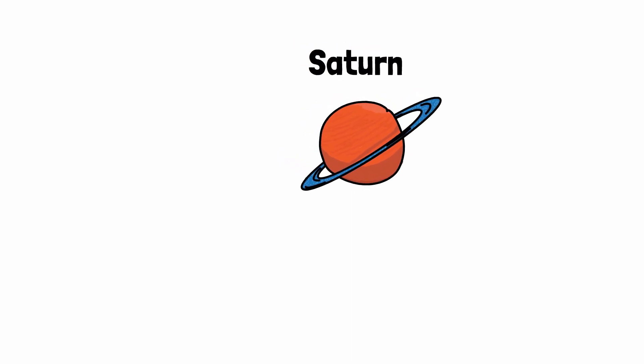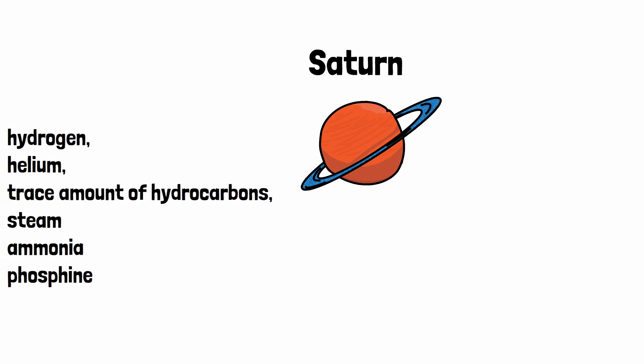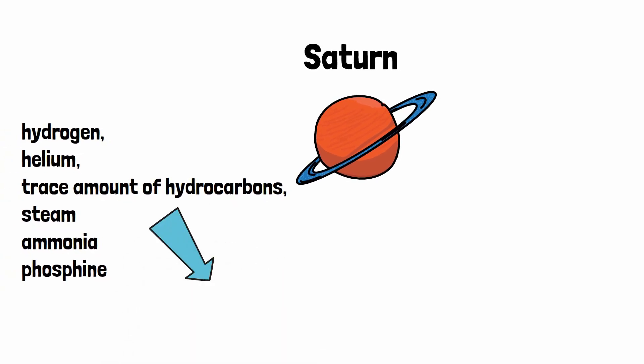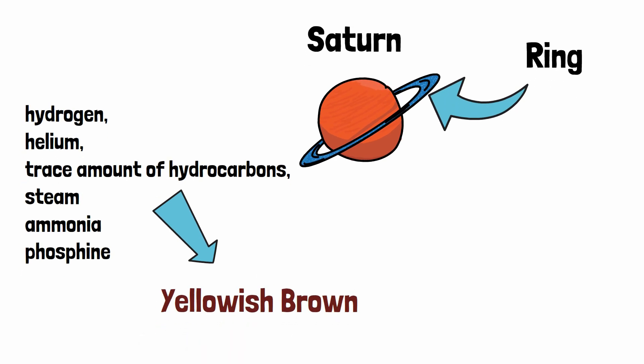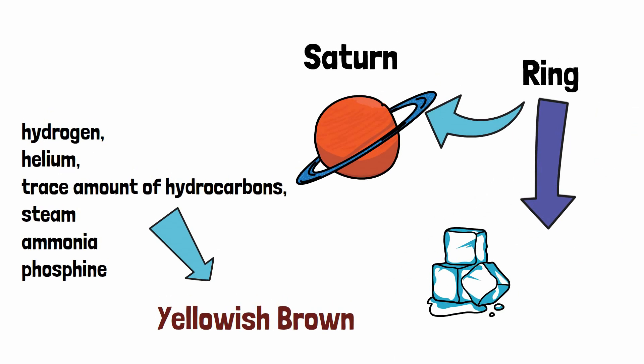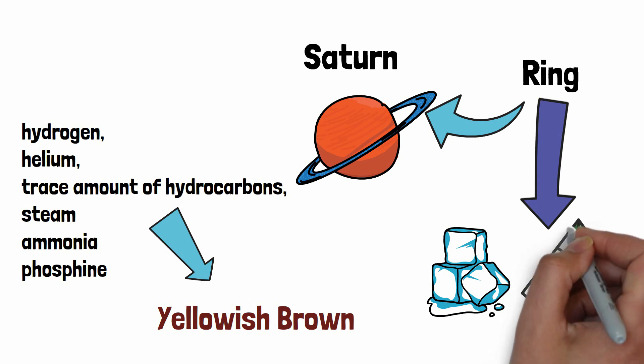Like Jupiter, Saturn is also considered as a gas giant. Its atmosphere is made up of hydrogen, helium, a trace amount of hydrocarbons, steam, ammonia and phosphine. All these chemical substances contribute to its having a yellowish-brown appearance. You must have heard of Saturn's rings. These rings are made up of ice crystals and are of the same appearance as the planet itself. However, colors of these rings can vary with concentration, and in case other materials are present unusually.